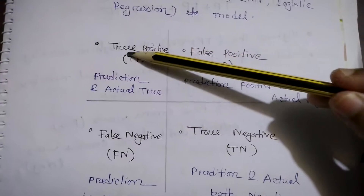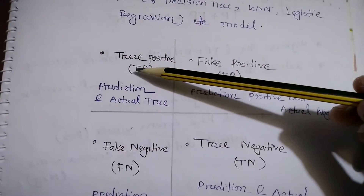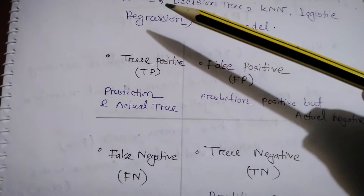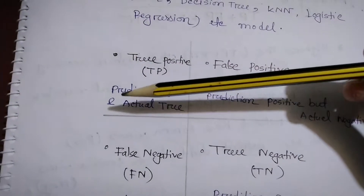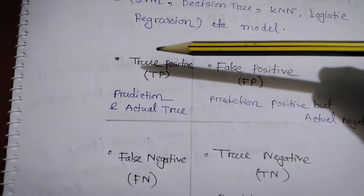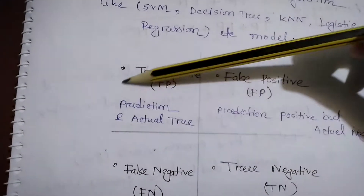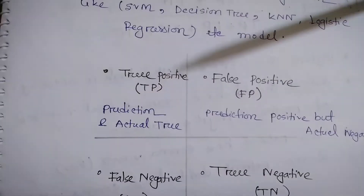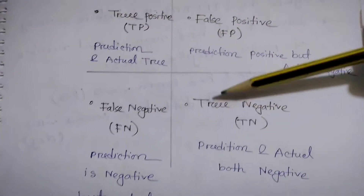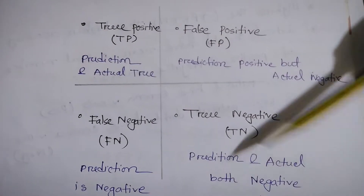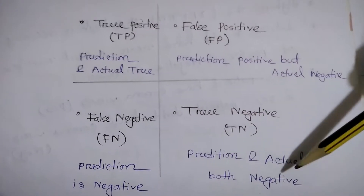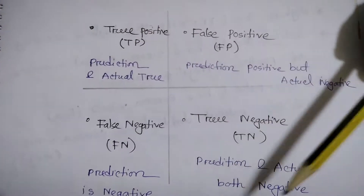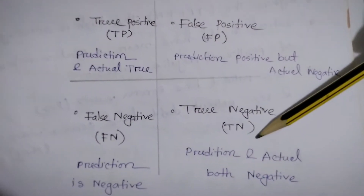The confusion matrix has four quadrants. True Positive (TP) means your model predicted you have a disease — say COVID-19 — and you actually do. True Negative (TN) means your model predicted you do not have coronavirus, and you actually don't. Both actual and predicted values agree, so they are 'true.'